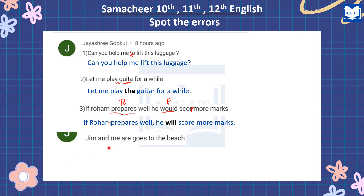Jim and me are goes to the beach. Generally, when we have a verb like 'are,' another verb following it needs the '-ing' form. So 'goes' should not appear after 'are' — it should be 'going.' So it should be: Jim and me are going to the beach.